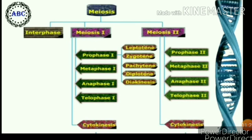In meiosis first, the phases are prophase first, metaphase first, anaphase first, and telophase first. Prophase first is again subdivided into five sub-stages: leptotene, zygotene, pachytene, diplotene, and diakinesis.